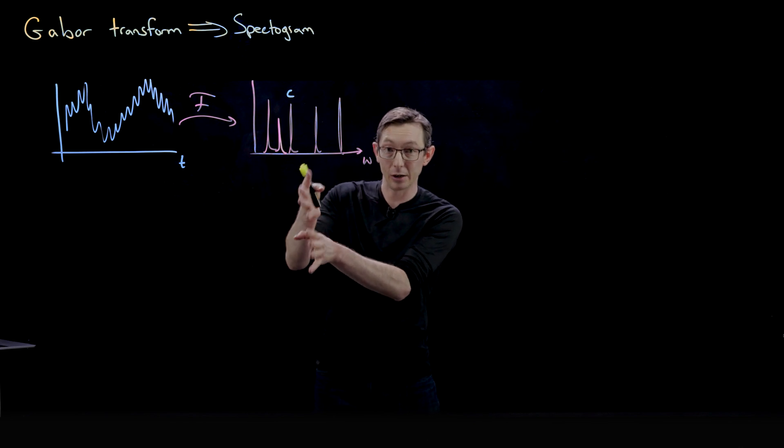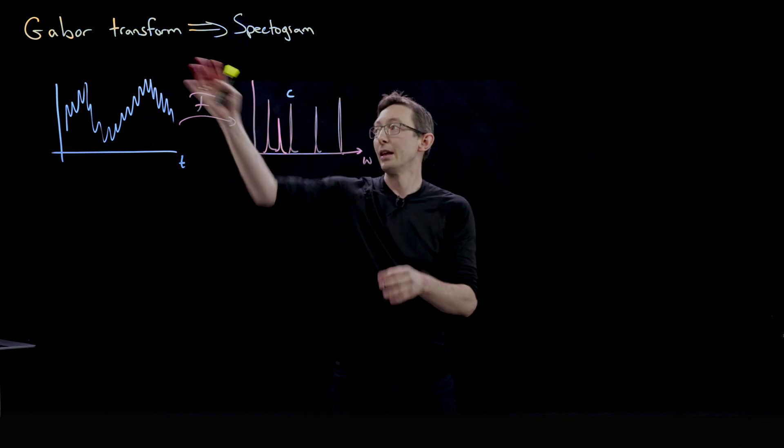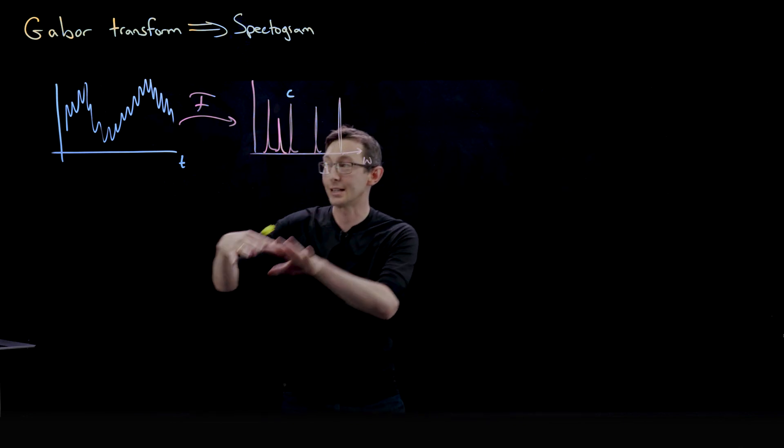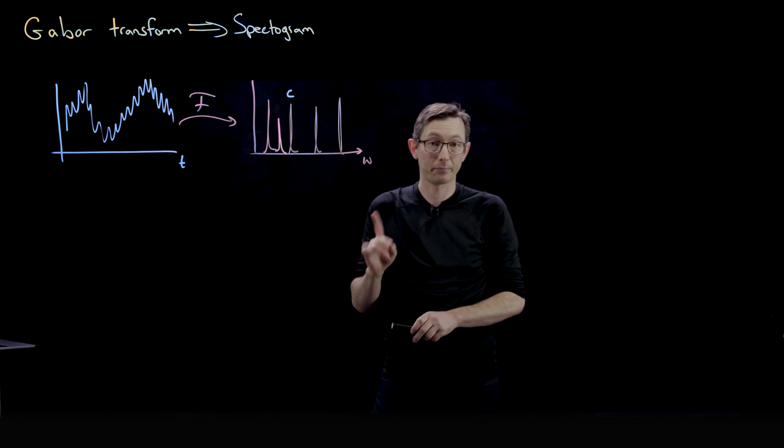So the music has frequencies that are evolving in time, and this Gabor transform is going to allow us to pull out both the frequency content and the temporal information of that signal.